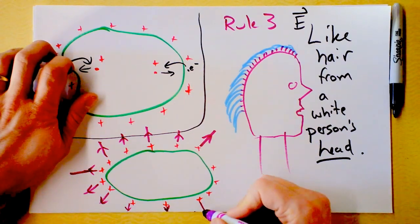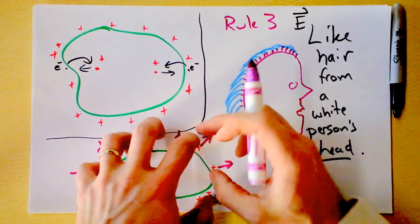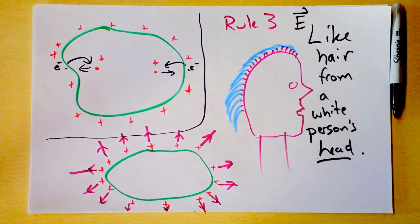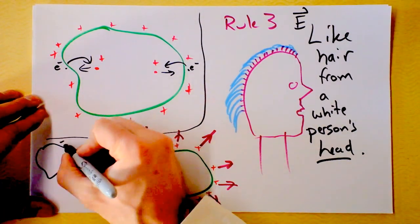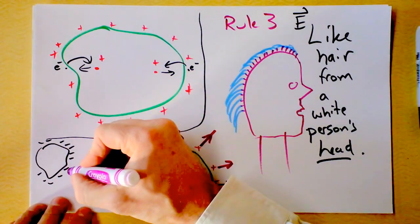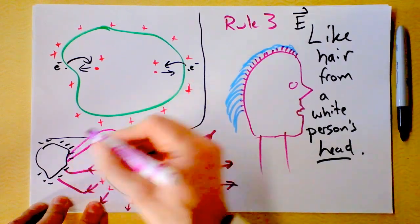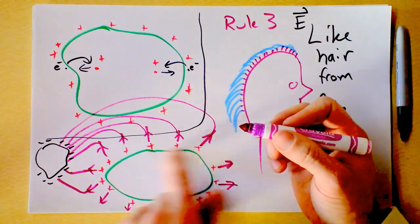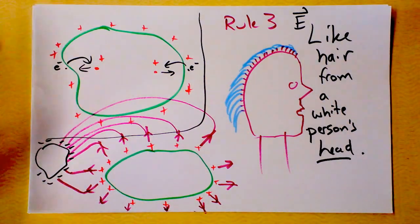The electric field is going directly out at all times just outside the conductor. Further away, the electric field could change — for instance, if we put something very negative nearby, a lot of these field lines would curve to go meet up with those negative charges. But immediately next to the surface, the electric field is always going to be pointing normal to the surface.